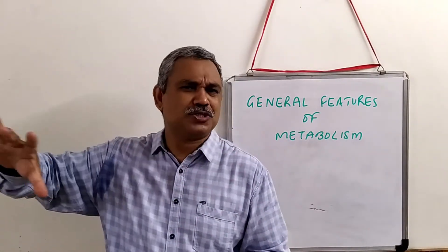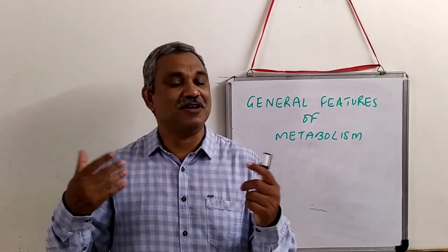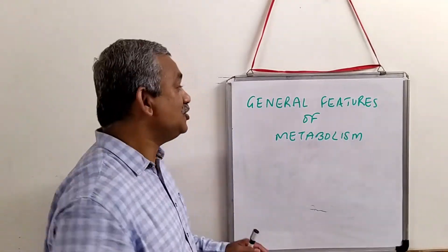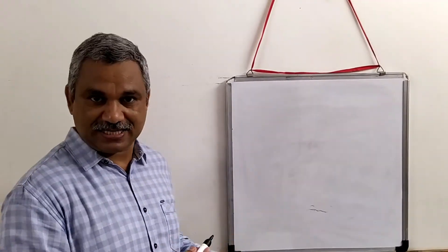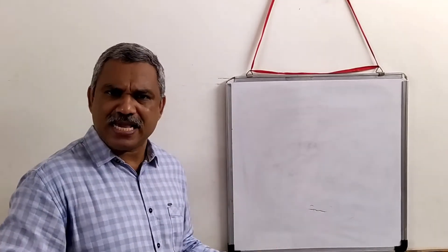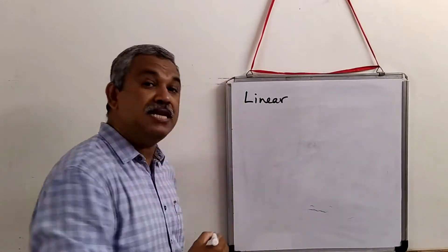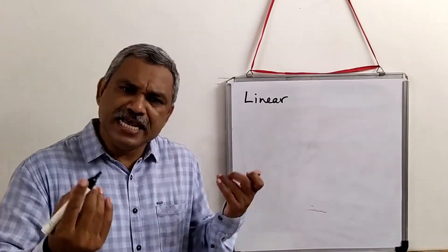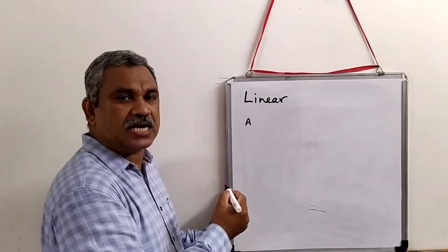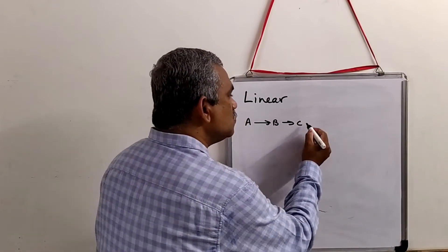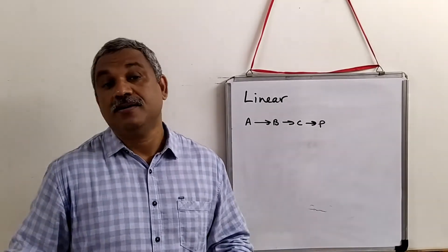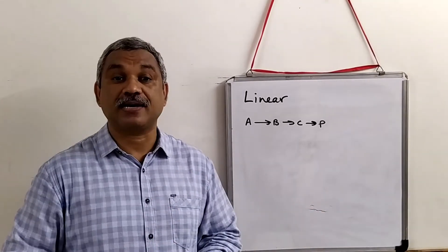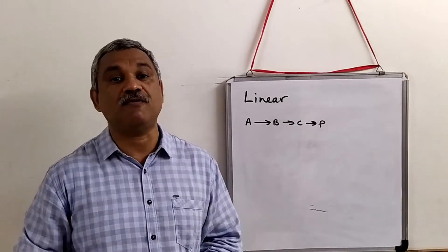Across all the thousands of reactions that you can see, these general features will apply. Look at the first general feature of metabolism. What is interesting is overall you will find three types of reactions. The first one is what we call a linear pathway. Linear pathway means you have A as a starting material, A will give rise to B, B will give rise to C, and C will give rise to a product P. It is called a linear pathway. Classic examples are degradation of carbohydrate, synthesis of monosaccharides, and amino acid synthesis.